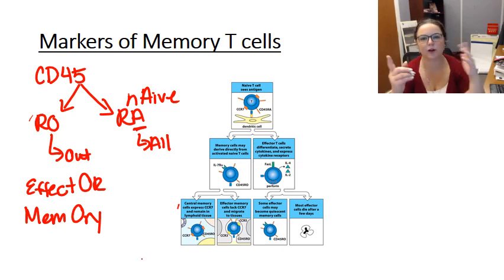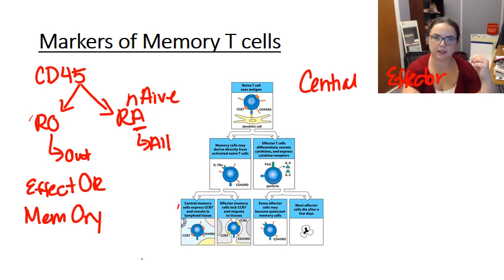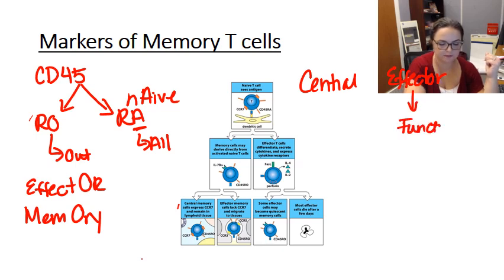Now there is one other thing I should tell you about memory. There are actually two types of T memory cells. There's central memory cells and there's effector memory cells. Both of these T cell types are long-lived because they're memory cells. The effector cells have slightly higher functionality and they actually traffic around the body, throughout it.